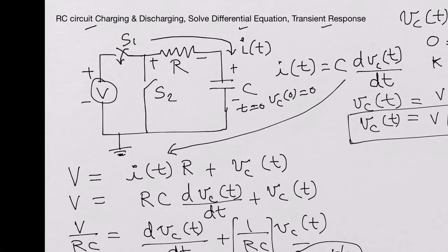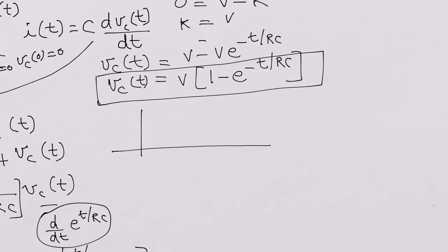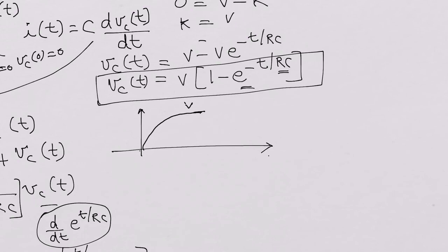So this is the voltage across the capacitor while charging through an RC circuit — this is the voltage that builds up across the capacitor with respect to time. RC is the time constant, and we will look at that in a separate video. At T = 0, charging starts and the voltage builds up. After 5 time constants, this term goes towards 0 and the voltage charges up to the full voltage V.